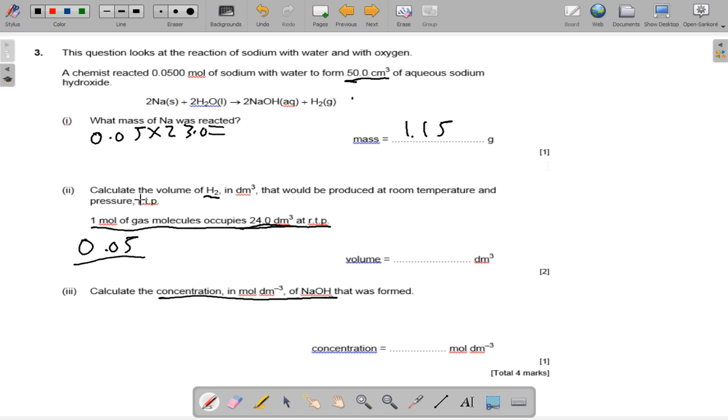2 to 2 for hydrogen is 2 to 1. So dividing it out over 2, we get 0.025 moles. And that times by 24, that is 0.6 decimeter cubed. And then 0.05 all over 50 over 1,000 because it's centimeter cubed.